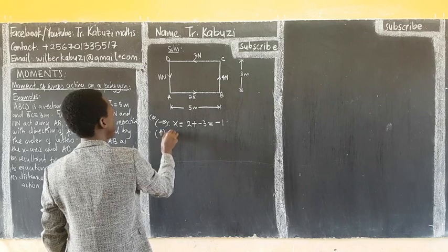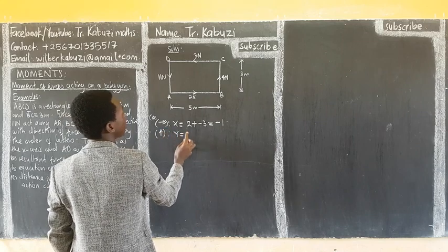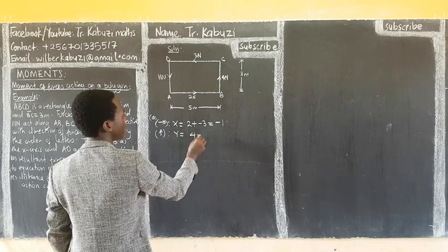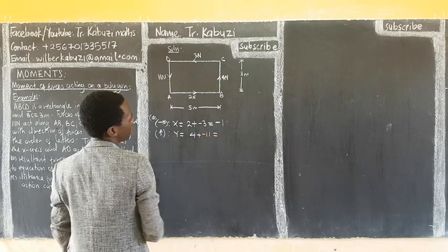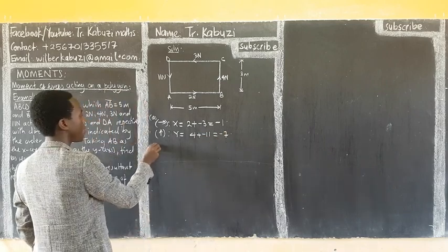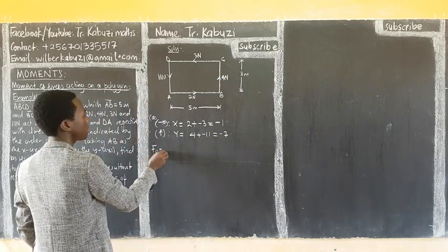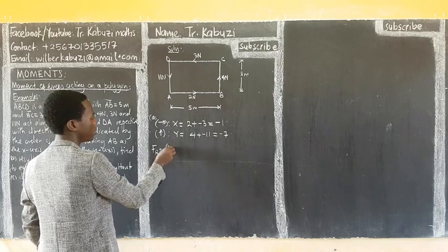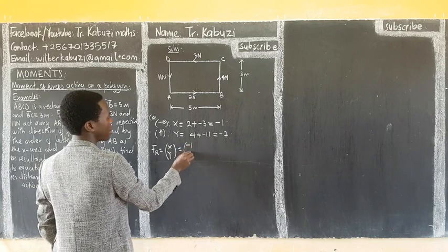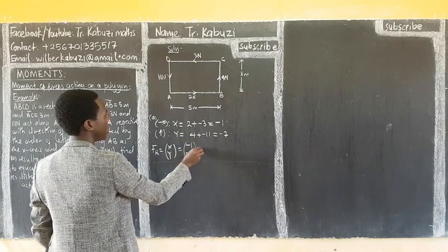Similarly, our Y is going to be, we have 4, then plus a negative, which would be negative 7. So meaning my resultant, which is equal to X, Y, is going to be negative 1, negative 7 Newtons.